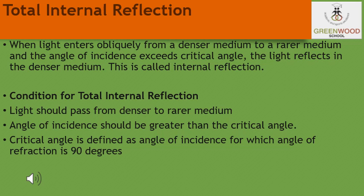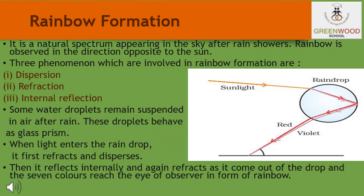What is the critical angle? The critical angle is the angle of incidence for which the angle of refraction is 90 degrees. Based on the phenomenon of total internal reflection, let us discuss how the rainbow is formed.